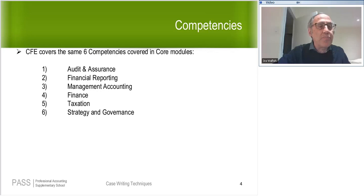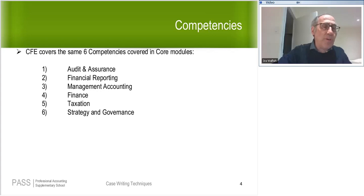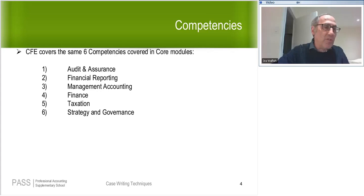A student asks about the Masters of Accounting program and not doing Capstone 2. All Capstone 2 is, essentially, is writing practice. If you're exempted from Capstone 2, it's because you're doing the equivalent at your university — effectively you are doing Capstone 2, just through your university.